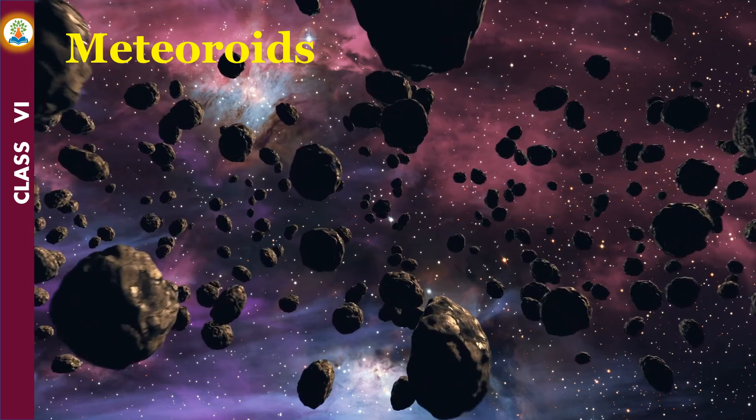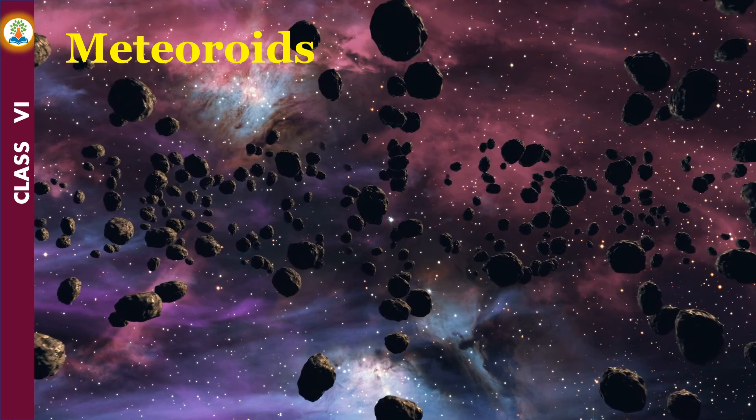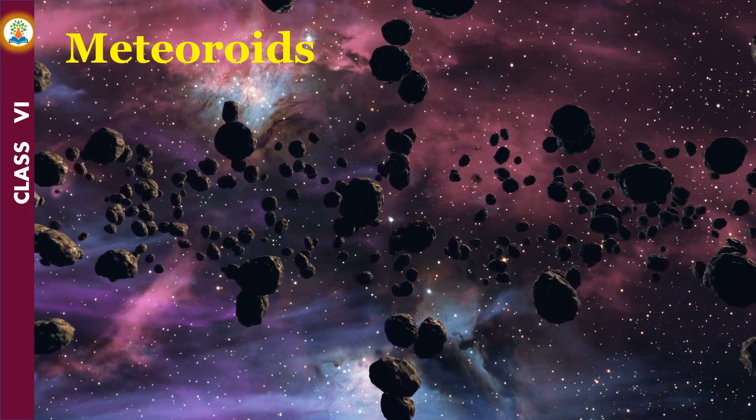The small pieces of rocks which move around the sun are called meteoroids. Sometimes these meteoroids come near to the Earth and tend to drop upon it.